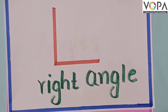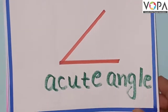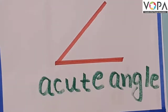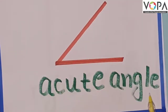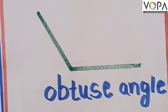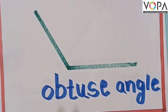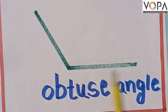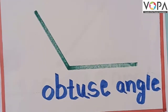This is an acute angle. Read with me: acute angle. Then this is an obtuse angle. Read with me: obtuse angle. Now we repeat it — obtuse angle.